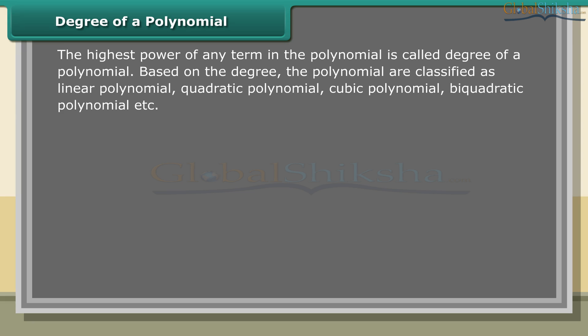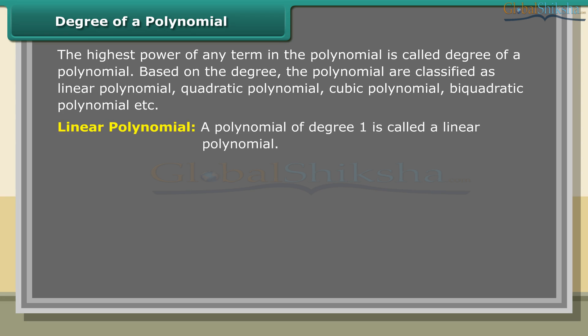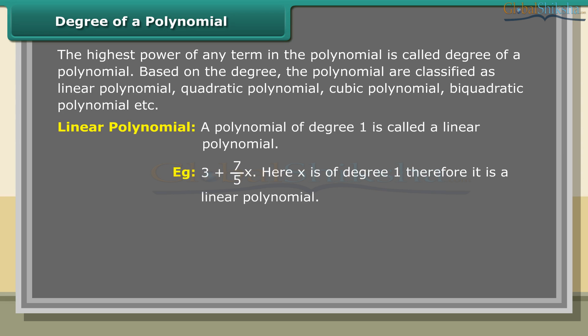Based on the degree, polynomials are classified as linear polynomial, quadratic polynomial, cubic polynomial, biquadratic polynomial, and so on. A polynomial of degree 1 is called a linear polynomial. Example: 3 + (7/5)x, where x is of degree 1, therefore it is a linear polynomial.